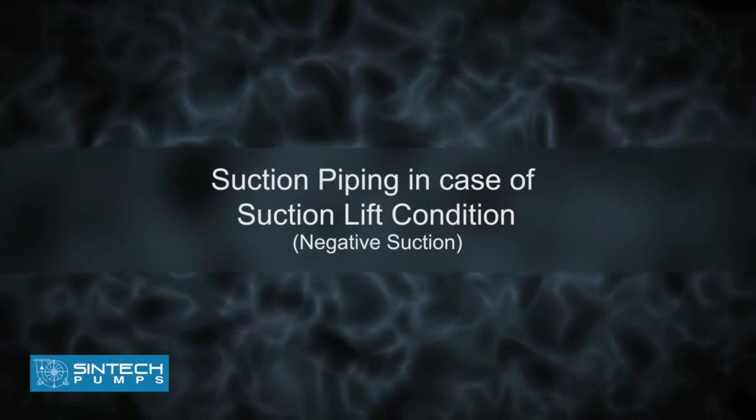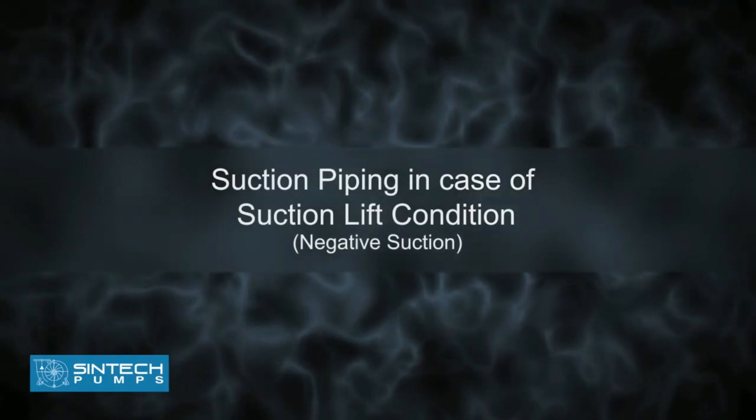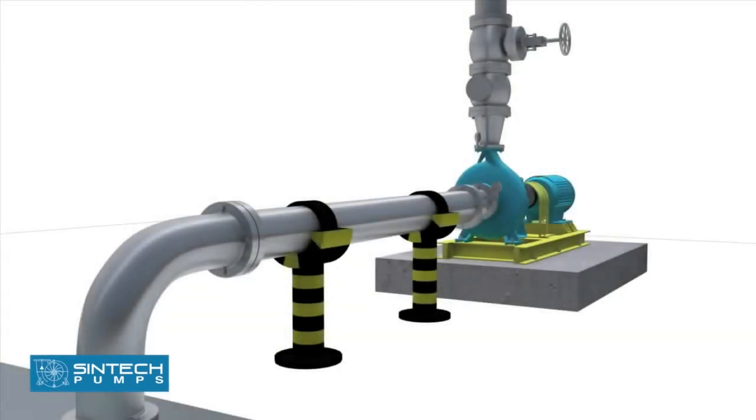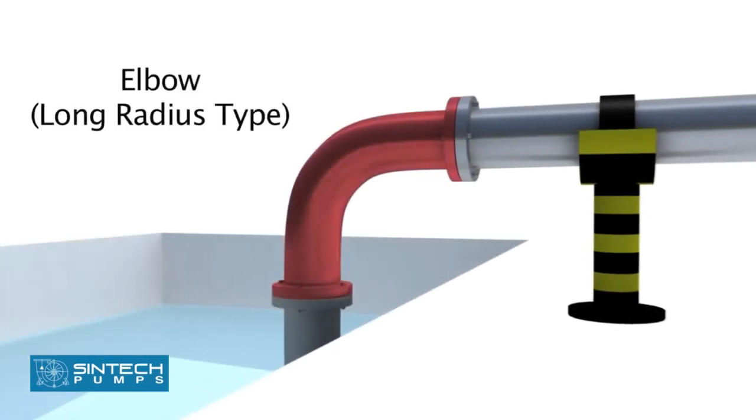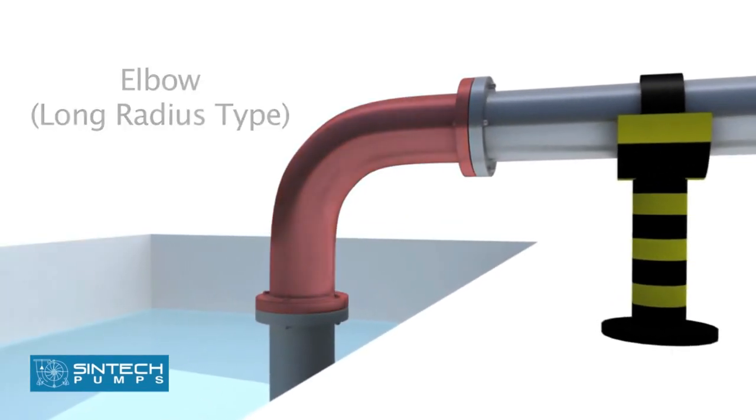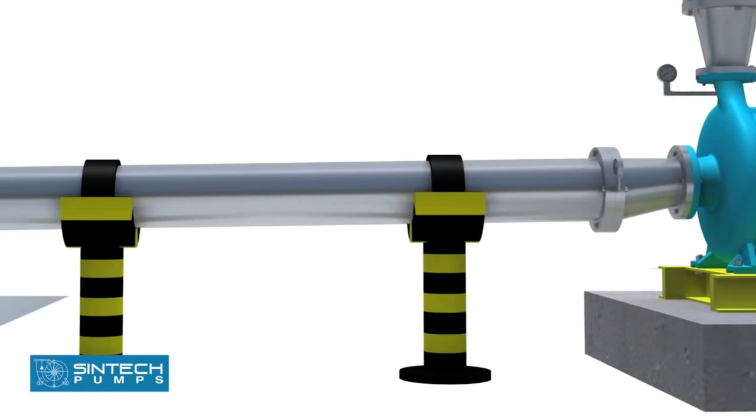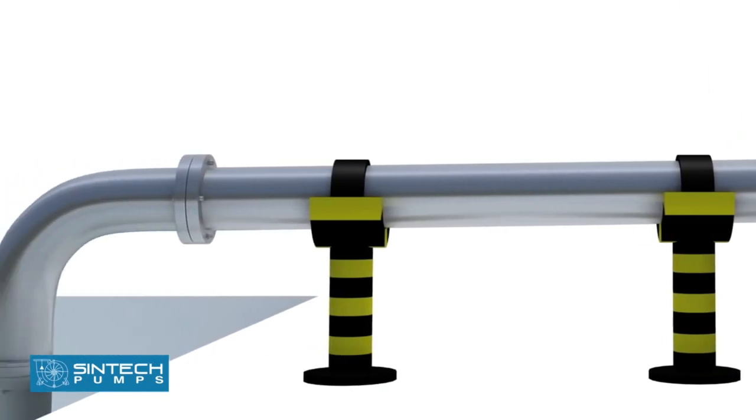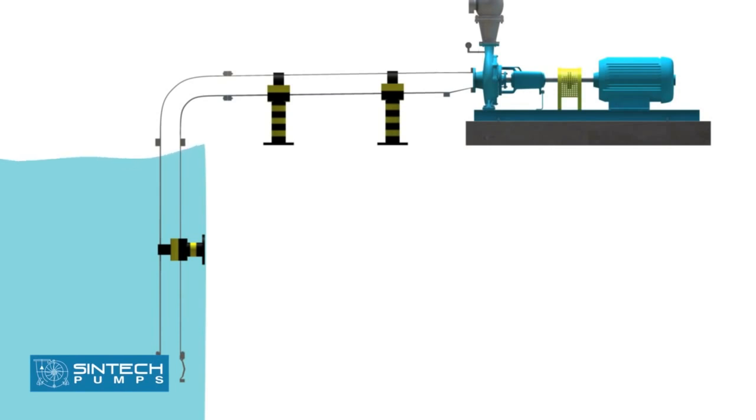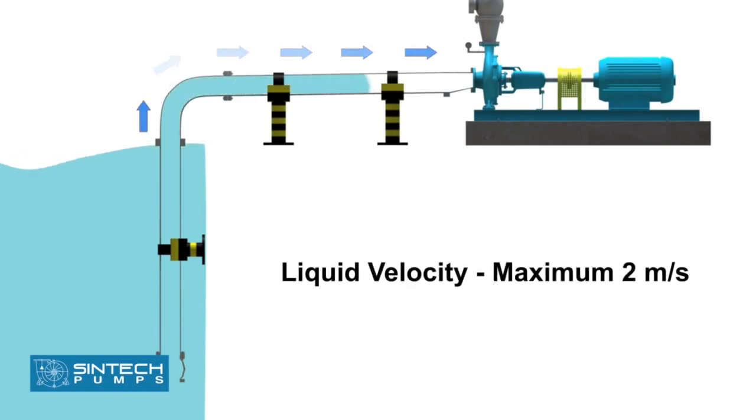Suction piping in case of suction lift condition (negative suction): The piping drum and the connection fittings should be properly aligned and supported separately. The elbow should be of long radius type. All suction piping must be airtight. The suction pipe should be sized to ensure the liquid velocity of not more than 2 meters per second.